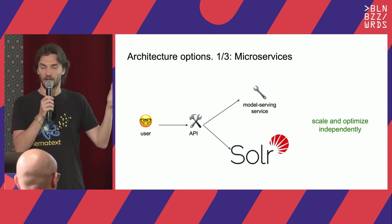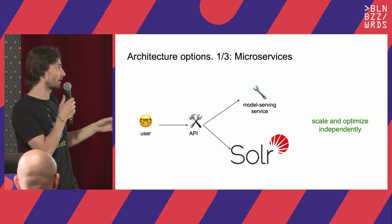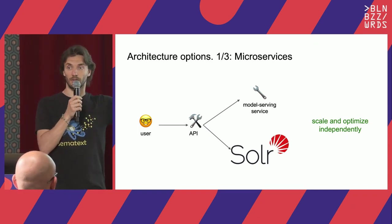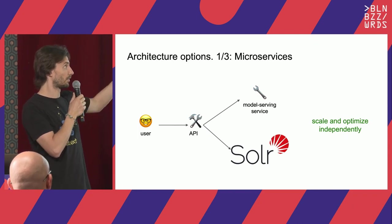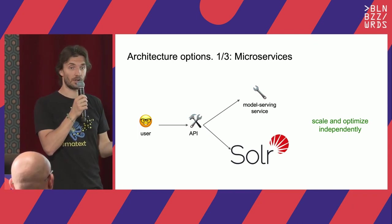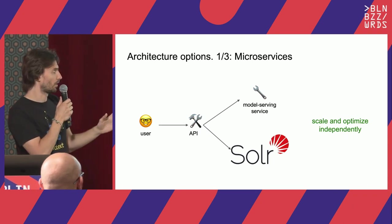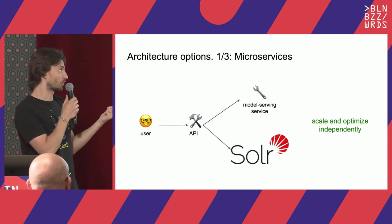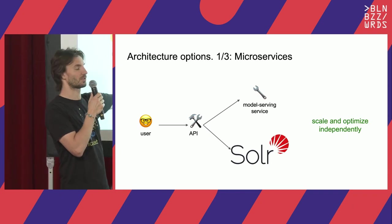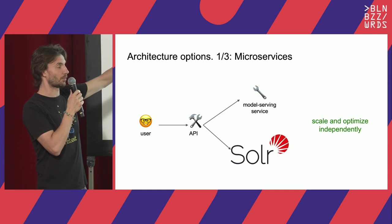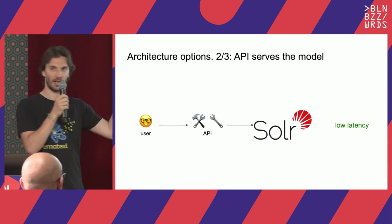Typically, the user sends a query, you have an API of some sort because you're not exposing Solr directly, and then you have a separate service that serves the model — which is a good idea. The only disadvantage is that extra hop. If you do autocomplete, that might add too much latency. Also, the model is somewhat separate, so it doesn't have great access to your business logic or your data.